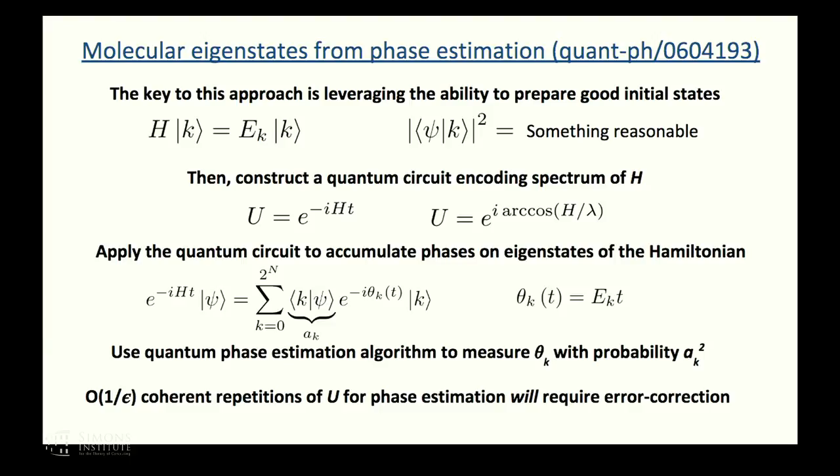Because of that property, you can use the quantum phase estimation algorithm to measure that phase. You can use it in a projective fashion so that when you measure the phase, it projects you also to an eigenstate of the operator. You're going to measure the phase associated with eigenstate K with the probability that goes with the squared overlap of the initial state and eigenstate K. In general, for phase estimation, you're going to require 1 over epsilon coherent repetitions of this unitary if you're interested in measuring that out to precision epsilon. Epsilon will be a small number for chemistry because we want high accuracy, so 1 over epsilon isn't a small number of repetitions, which is why I believe that you'll really need quantum error correction for this sort of algorithm.